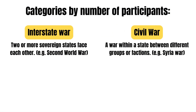You can categorize them by number of participants. There are interstate wars, in which two or more sovereign states face each other — for example, the Second World War. And civil wars, a war within a state between different groups or factions — for example, the Syrian War.